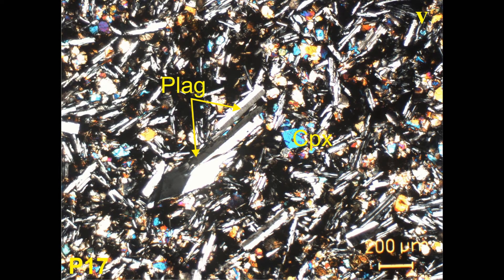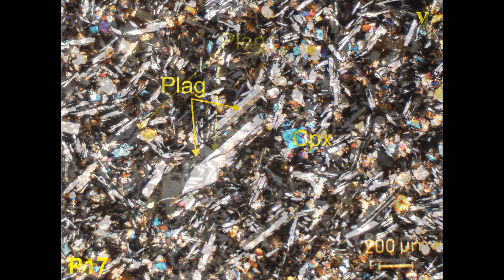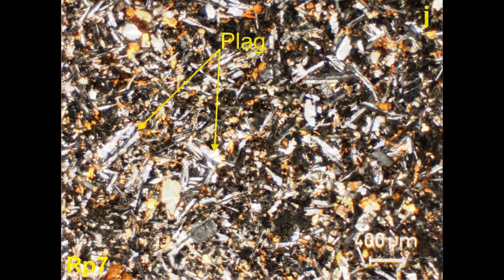Intersertal texture: when magma is crystallizing, early-formed crystals of pyroxene and plagioclase form first. After their crystallization, certain spaces are left in the system. Those spaces are later occupied by glass, known as intersertal glass, and the overall texture is known as intersertal texture.